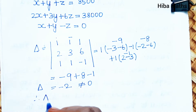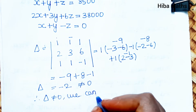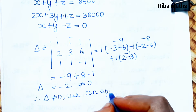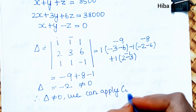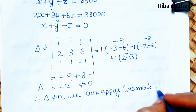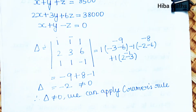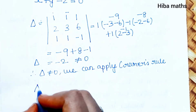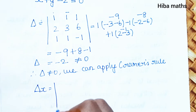So Δ equals −9 + 8 + (−1) = −2. Since Δ is not equal to 0, we can apply Cramer's rule.